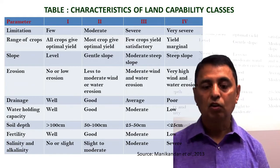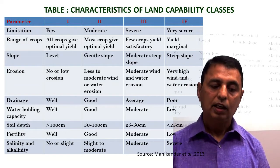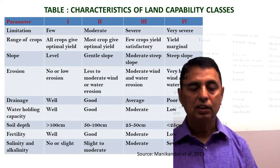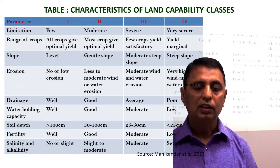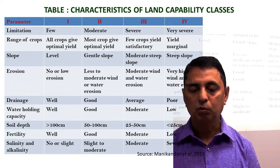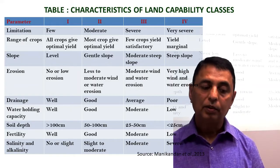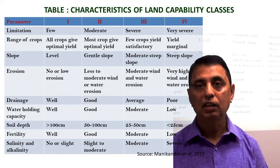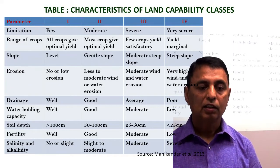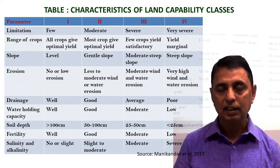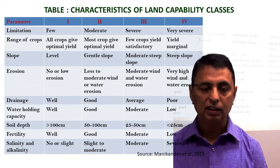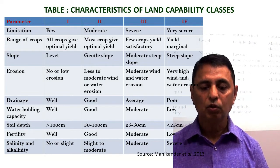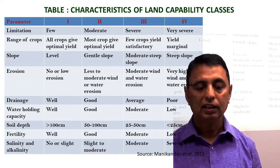Because of the shallow soil depth in class 4, deep-rooted crops cannot be grown. From a fertility point of view: class 1 is very good, class 2 is good, class 3 is moderate, and class 4 is low in fertility. Regarding salinity and alkalinity, particularly in saline-prone areas: class 1 has no or slight salinity, class 2 has slight to moderate, class 3 moderate, and class 4 has severe salinity and alkalinity.